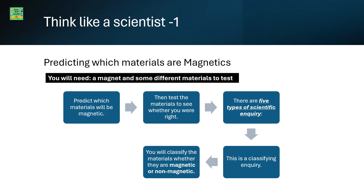Think like a scientist: Predicting which materials are magnetic. You will need a magnet and some different materials to test. Predict which materials will be magnetic, then test the materials to see whether you were right.